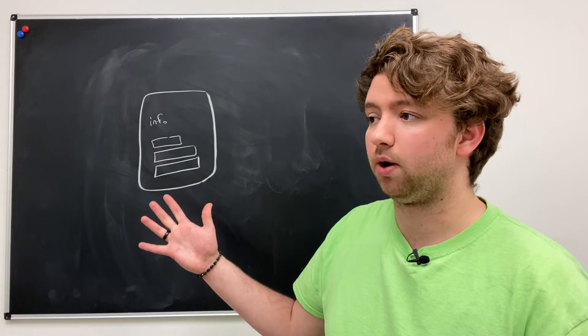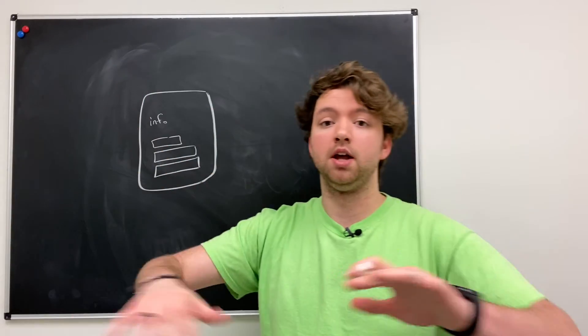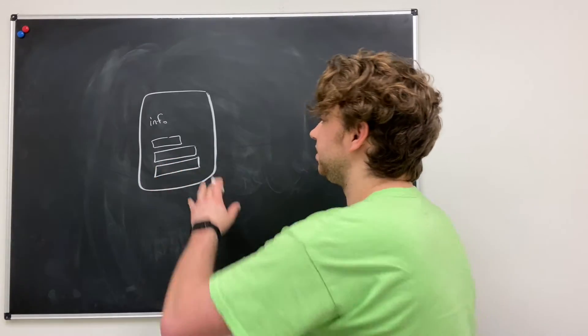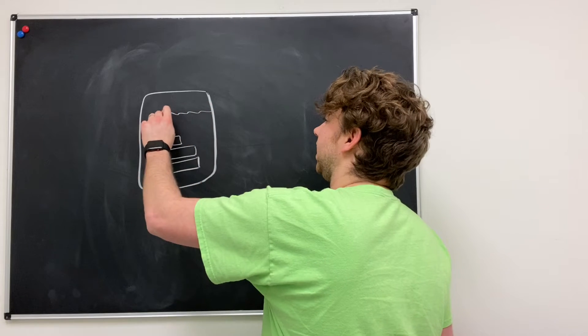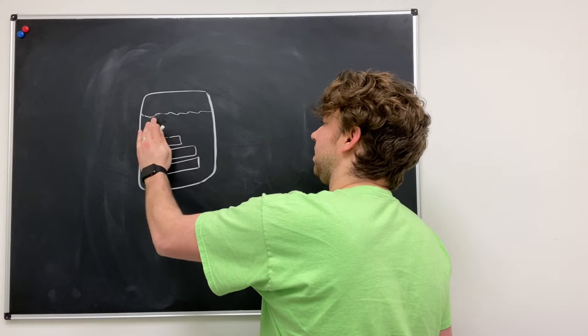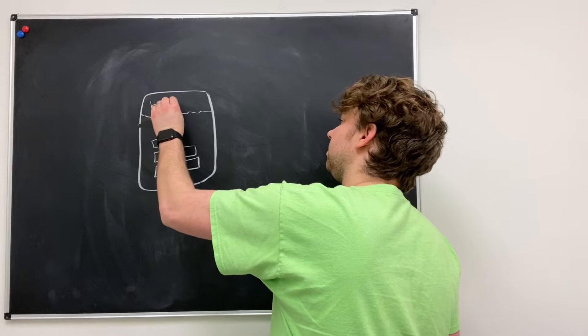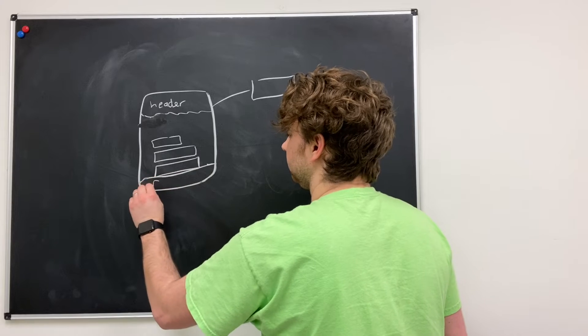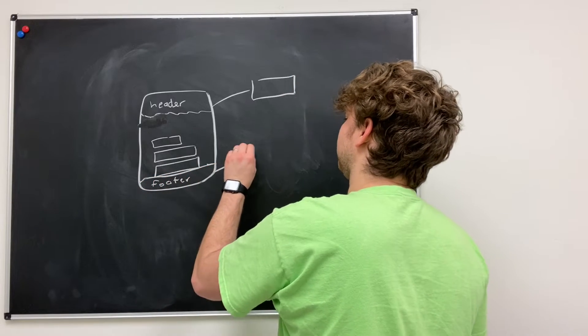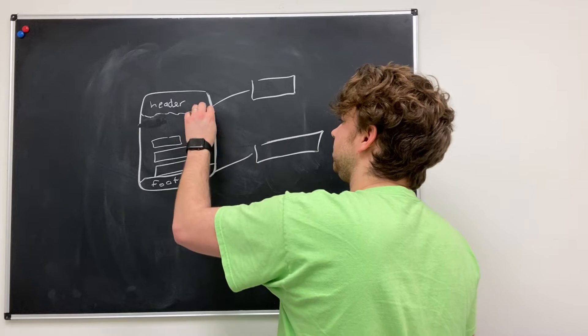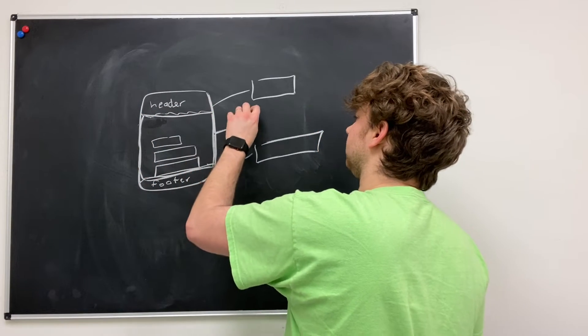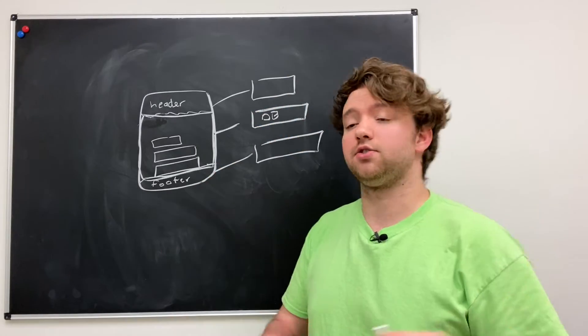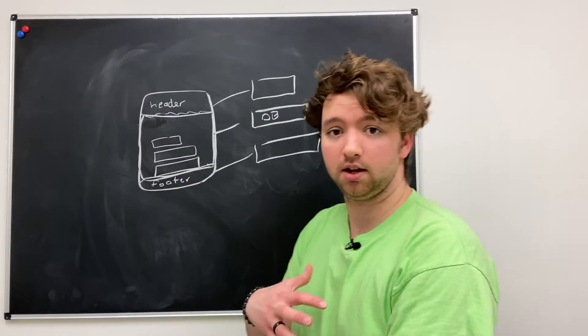And then what happened next? Dynamic web pages. Boom, the whole world exploded and everything changed, because now instead of just having this information we could generate parts of the website. So for example, we could have the header that could be coded from one location, we could have the footer that could be coded from another location, and then we could generate the body.